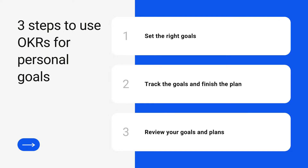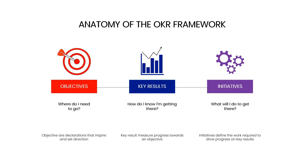Before understanding these three steps, let's first see what OKRs actually are. OKR is an acronym for Objectives and Key Results. The OKR framework is broken down into an objective that inspires action, key results that measure progress towards that objective, and initiatives that allow the key results to come to execution.